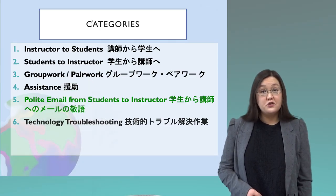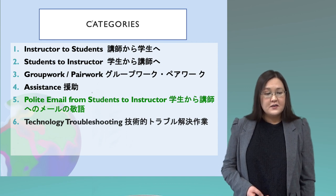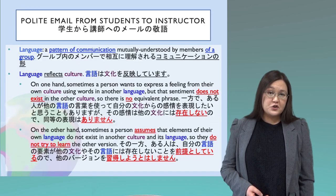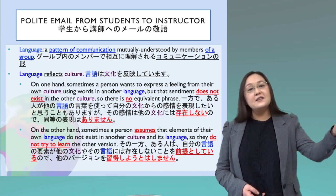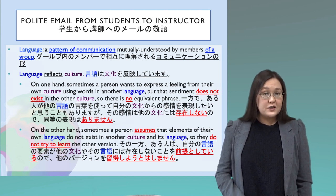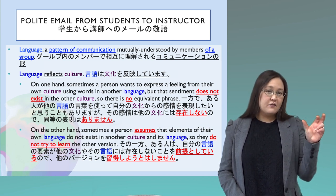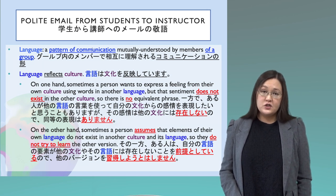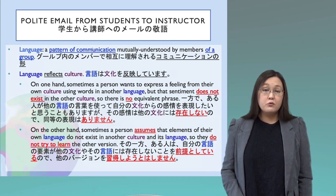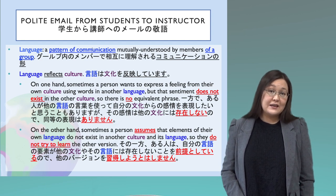Sometimes you need to communicate with your instructor when you're not in the classroom — in that case, you might send an email. Previously I explained that language reflects culture, and in some cases a person might assume something true in their own language doesn't exist in another. This is true about polite speech. In Japanese, you have keigo — you change the end of a word or replace a word with a different word. In English, we also have polite speech and writing, but the style is different. Instead of changing word endings or replacing words, we insert additional words to soften our sentences and make them less direct.